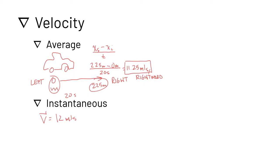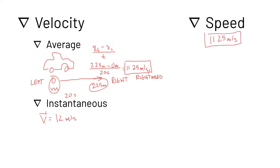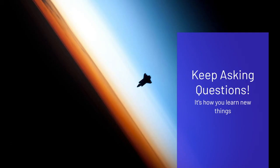Now let's look at speed. The speed would just be 11.25 meters per second — just the magnitude of the average velocity, with no direction involved. It's just the scalar quantity of the average velocity. Keep asking questions — it's how you learn new things.